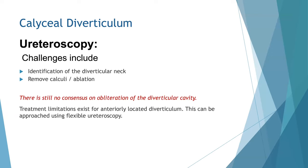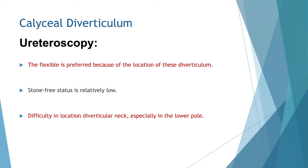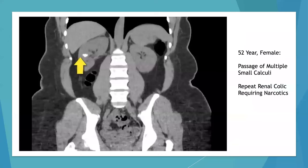Regarding the ureteroscopic approach, challenges include identification of the diverticular neck and removing the calculi and ablating the cavity. There is still no consensus on obliteration of the diverticular cavity. Treatment limitations exist given the anatomic location of the diverticulum and stone burden. The flexible approach is preferred as the location of these diverticula are often hard to access, stone-free status is quite difficult to achieve, and a difficult location of the diverticular neck is especially found in lower pole situations.